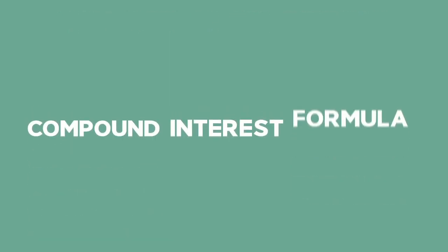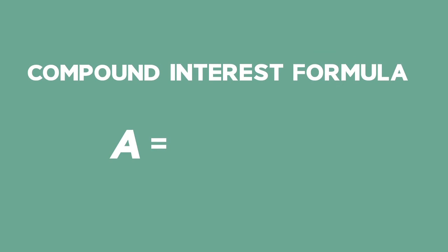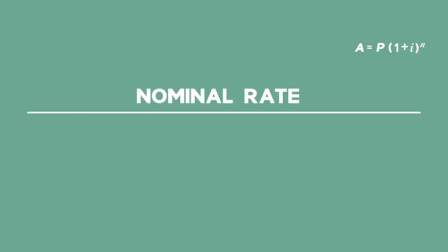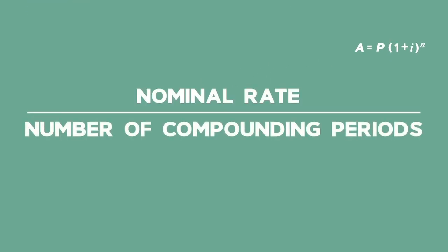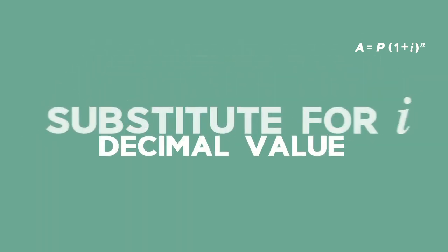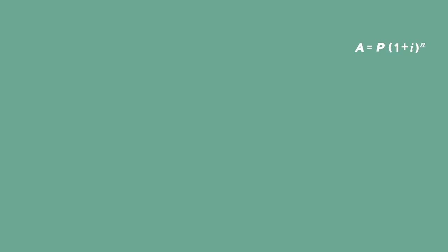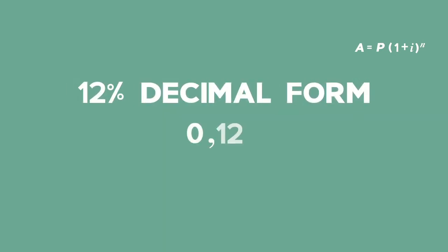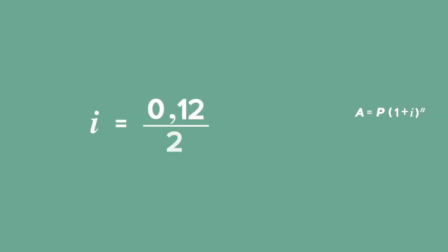For the first part of the question, you will be using the compound interest formula A equals P times 1 plus i to the power of n. First, work out the nominal rate divided by the number of compounding periods. This is the decimal value you will substitute for i. 12% in decimal form is 0.12. Divide 0.12 by 2 since interest is compounded semi-annually to give 0.06.